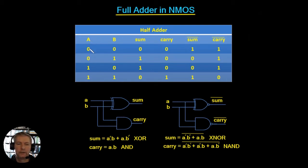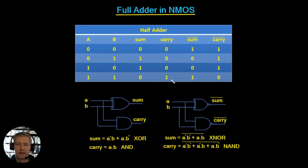When we add these two together, 0 plus 0 gives us 0, 0 plus 1 gives us 1, 1 plus 0 gives us 1, and 1 plus 1 gives us 0 with a carry of 1 to the next most significant bit. So we're going to have two outputs: a sum output and a carry output.